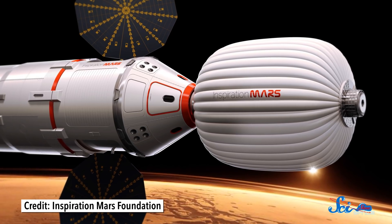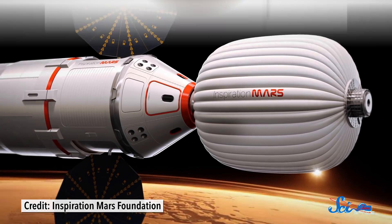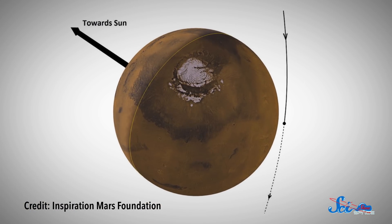But that mission was Inspiration Mars, in which a noted rich guy who likes space, Dennis Tito, wanted to send a married couple to fly around Mars, but never land. This mission didn't happen for a number of reasons, including NASA not dropping everything they were doing to help out a random multimillionaire.